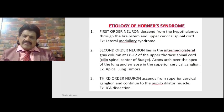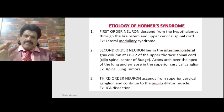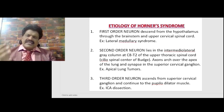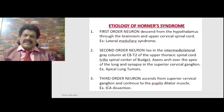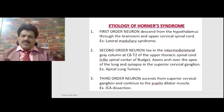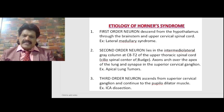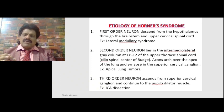The first order neuron descends from the hypothalamus through the brainstem and upper cervical spinal cord to C8-T1. If there is a lesion anywhere along this path, the first order neuron is affected — the lateral medullary syndrome is a classic example. The second order neuron lies in the intermediolateral gray column of C8-T2, the ciliospinal center of Budge. Axons arch over the apex of the lung and synapse in the superior cervical ganglion. A classic example of a second order lesion causing Horner's syndrome is an apical lung tumor.